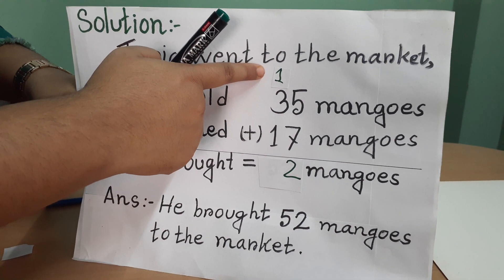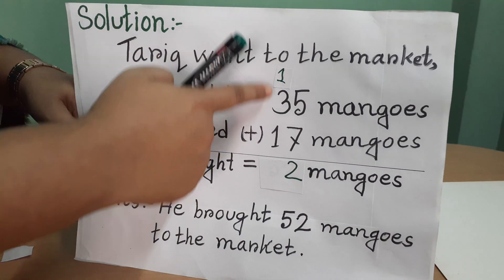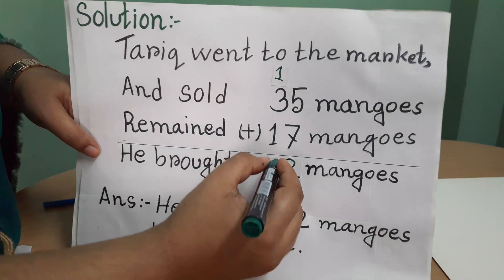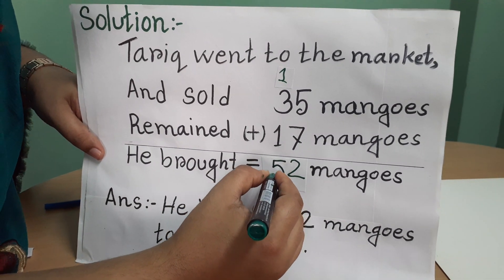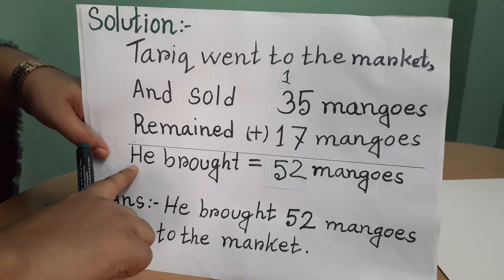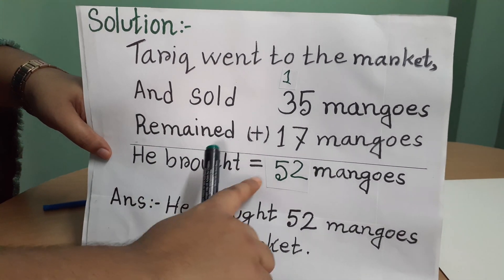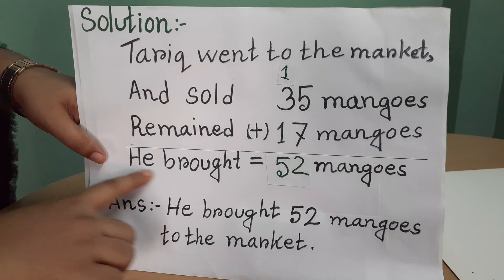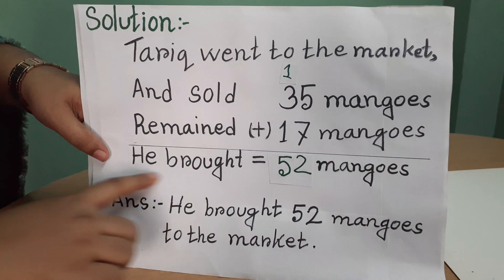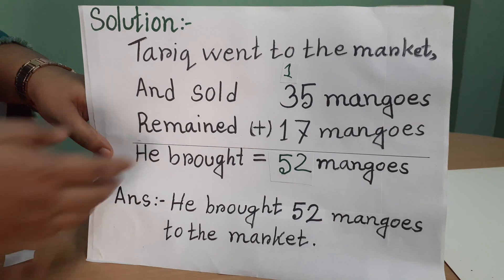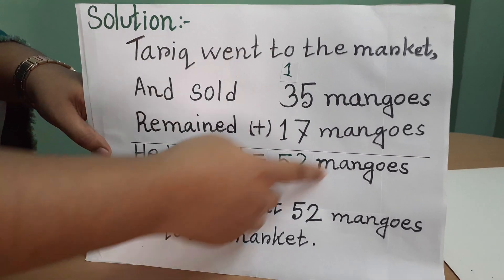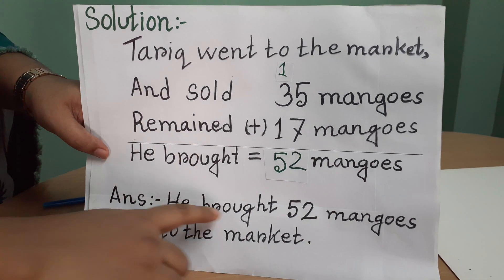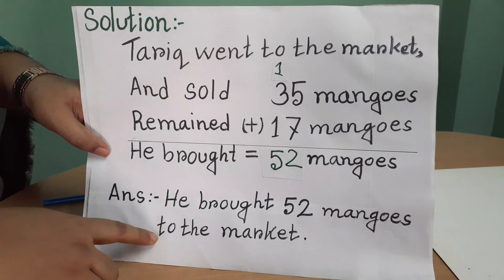1 is in our hand, so I will write 1 on the top on the 10's place. Then I will count it all together. 1 plus 3 is 4. 4 plus 1 is 5. So at first, he brought 52 mangoes. This one is the fourth line. Our statement has been done, our calculation has been done, so only the answer is left. Answer: he brought 52 mangoes to the market.